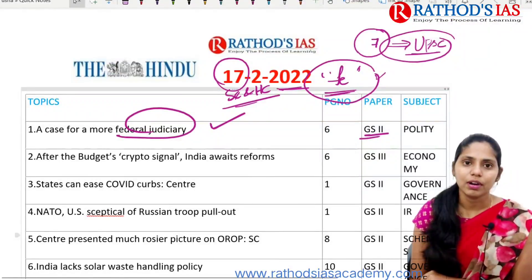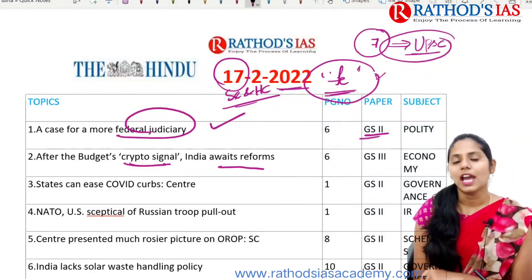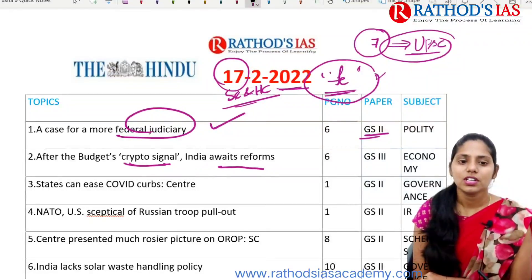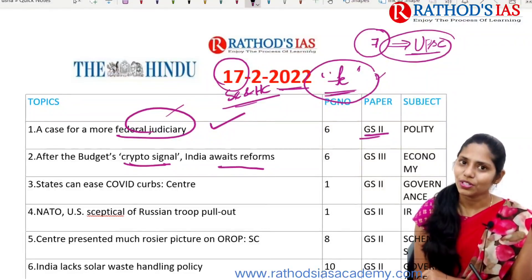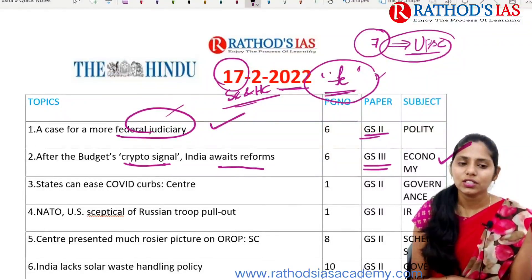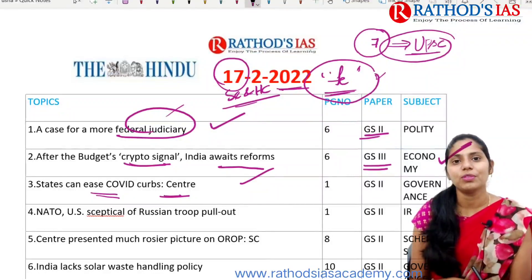The next topic is about after the budget's crypto signal, India awaits reforms. This article is mainly talking about cryptocurrency. In the recent budget, our finance minister made a statement regarding the tax on crypto transactions. This article is important from your economy point of view which mainly comes under GS Paper 3. Next topic is about states can ease COVID curbs, says center. This topic is important from your governance point of view under GS Paper 2.